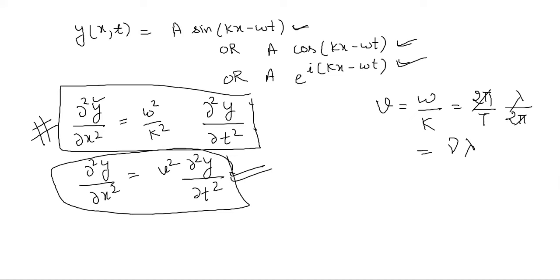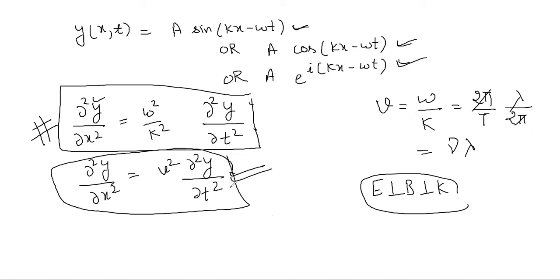A student asks how we will prove that EM waves are transverse. The instructor replies: we will prove that the electric field is perpendicular to the magnetic field, and that both are perpendicular to the direction of propagation. This will be done after proving that the velocity of EM waves equals the speed of light — it will be the next derivation. Another student asks about the class recordings; the instructor says they are on LMS and can also be shared on Google Drive.